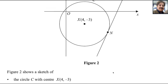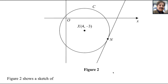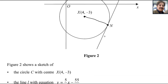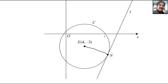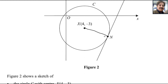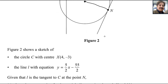Looking at the diagram, we need to find the equation of the line passing through X and N — this is actually the radius. The point X is given, so we need to find the gradient of line XN. Fortunately, the gradient of line L, which passes through N as a tangent, is given. From the equation, the gradient of line L is 5 over 2.